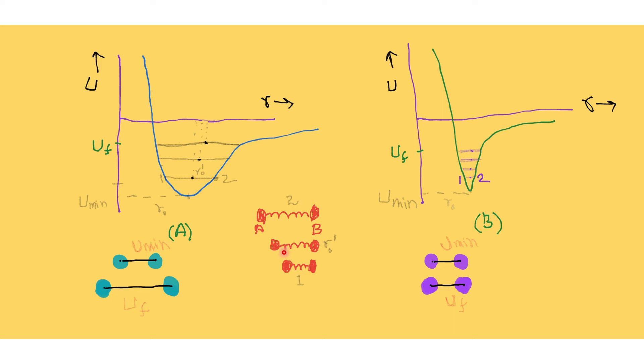Similarly when we heat it to higher temperature, that is by increasing the energy further, the scenario changes and now the r_naught dash is shifted towards the right side.